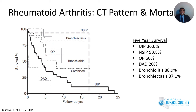CT pattern is also predictive of mortality, as demonstrated in a study with rheumatoid arthritis. Five-year survival with a UIP pattern was 36%, whereas with an NSIP pattern it was around 94%. Organizing pneumonia pattern had survival of around 60%. Patients presenting with diffuse alveolar damage had the worst survival at about 20%. Those with bronchiolitis and bronchiectasis had better survival compared to UIP, organizing pneumonia, or DAD — with five-year survival around 87–88%.